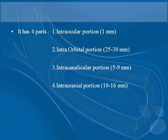The optic nerve has four parts: the intraocular portion, the intraorbital portion, the intracanalicular portion, and the intracranial portion. The intraocular portion is 1 mm; the intraorbital portion is 25 to 30 mm in length; the intracanalicular portion is 5 to 9 mm; and the intracranial portion is 10 to 16 mm in length.